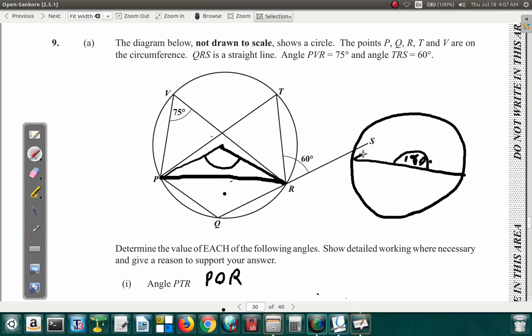This is the diameter of a circle. What's the angle of the diameter? It's 180 degrees. What's the angle at the circumference? You know it's 90 degrees. And that reminds me of a circle theorem that says...